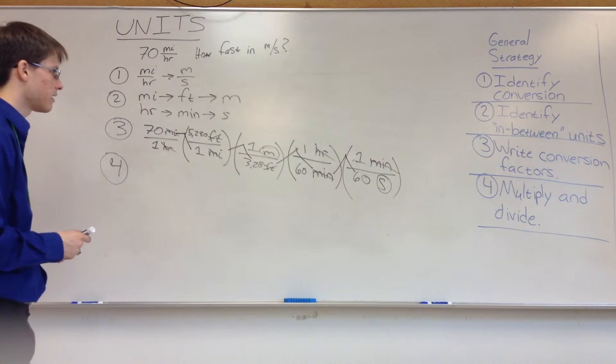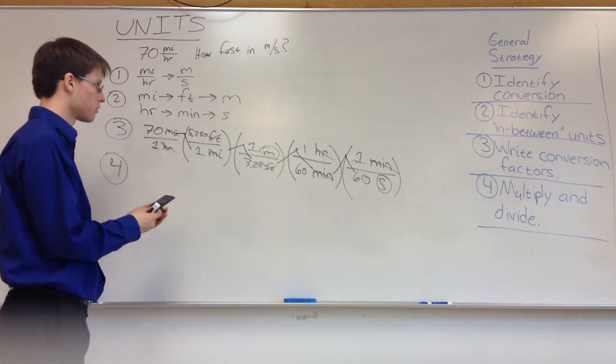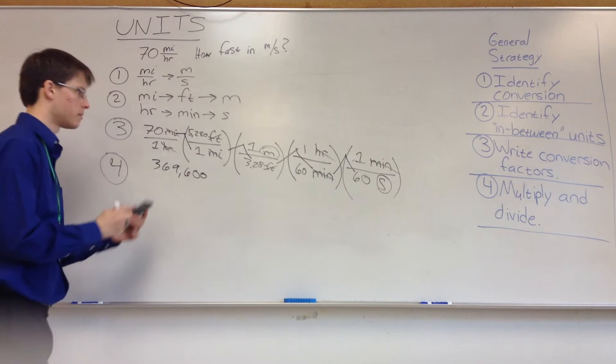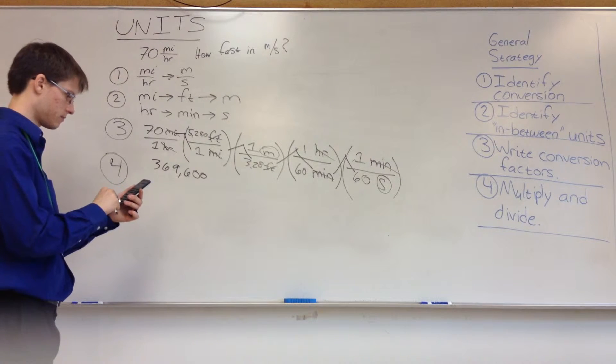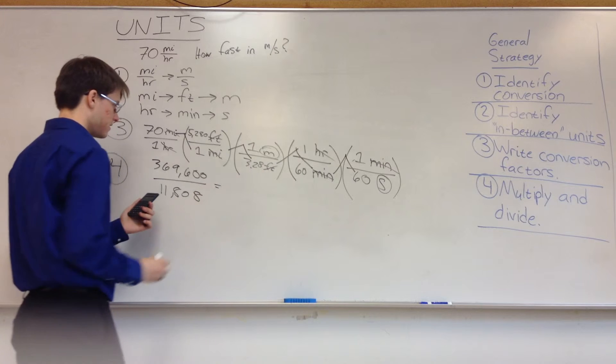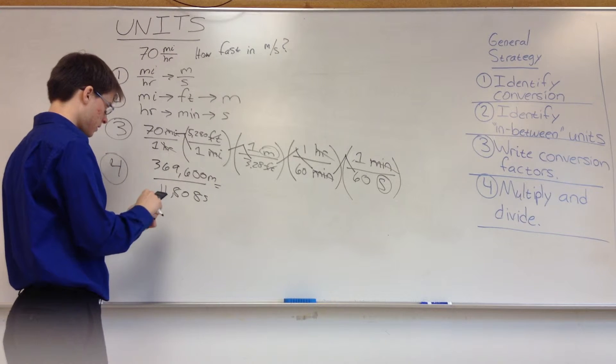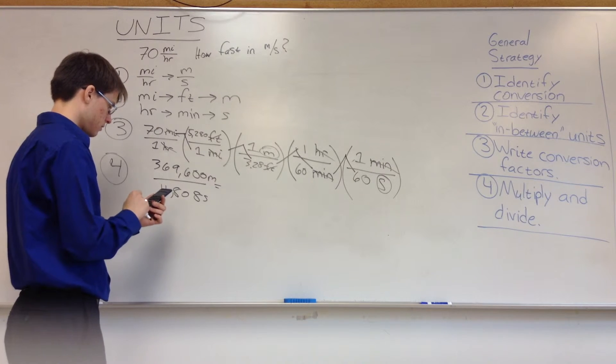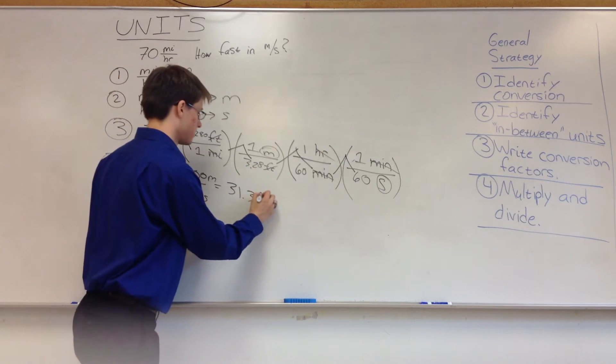So here, if you want an actual answer, I have a calculator. So we're going to say 70 times 5280 is equal to 369,600. And on the bottom, we have 3.28 times 3600, which is 60 times 60. And we have 11,808. And now we can divide these. And if we divide these, we know this is in terms of meters, this is in terms of seconds. So we can say, 369,600 divided by 11,808 is equal to 31.3. And that is in units of meters per second.